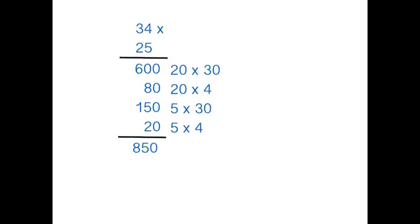first of all, you would need to find 20 times 30, which is 600, 20 times 4, which is 80, 5 times 30, 150, and 5 times 4, which is 20.